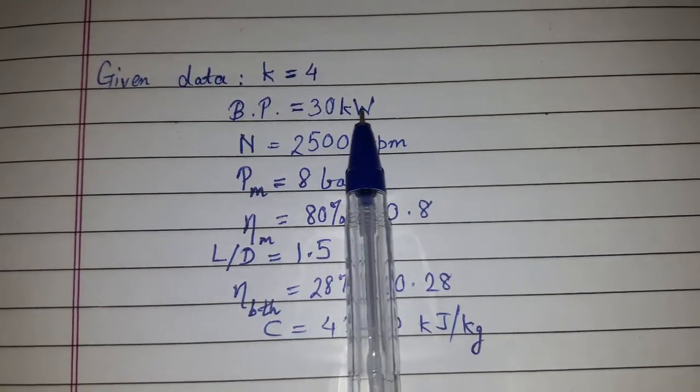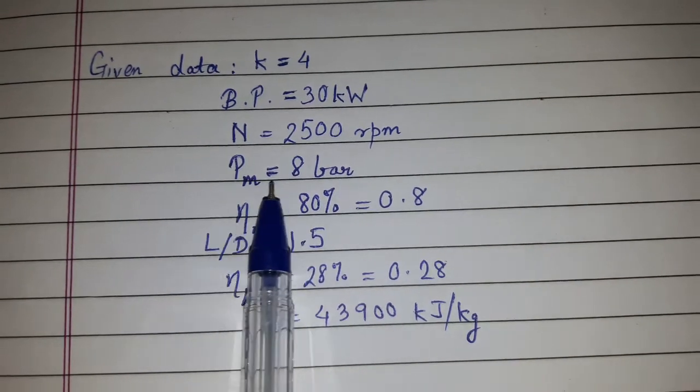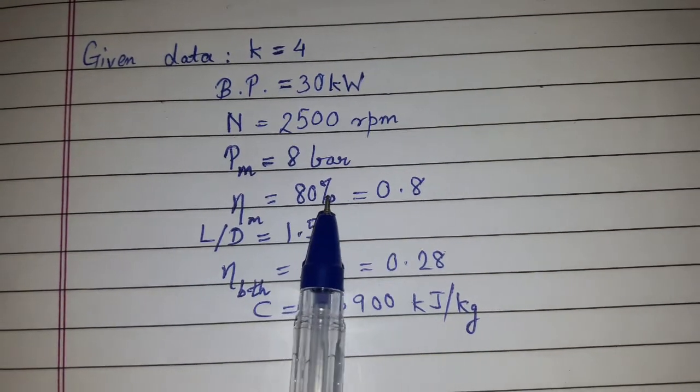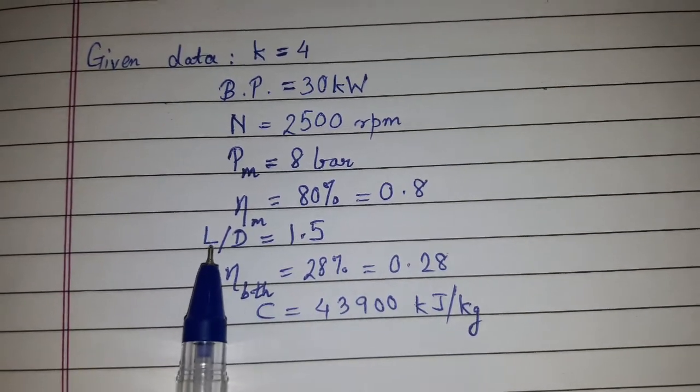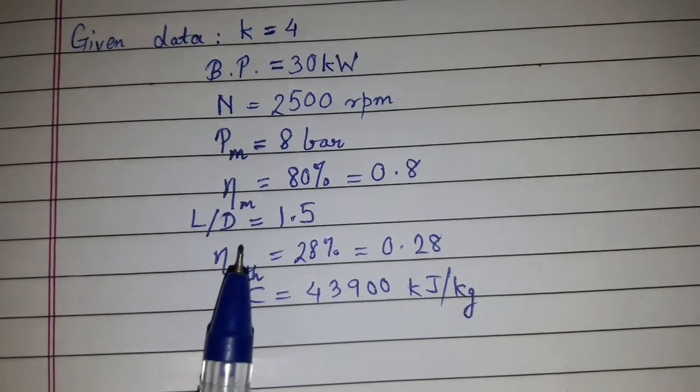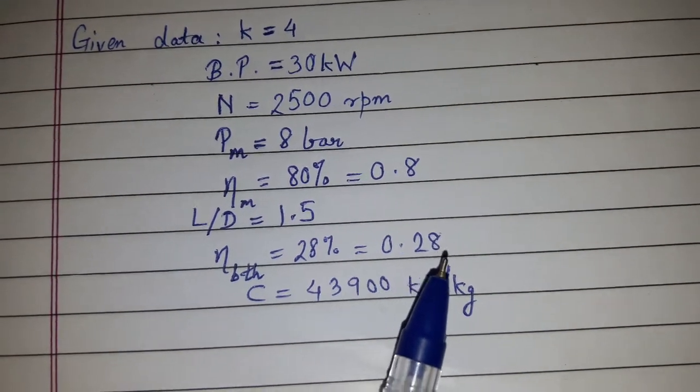So this is BP 30 kilowatts, capital N equals 2500 rpm, pm equals 8 bar. Mechanical efficiency is given as 80 percent, that is 0.8. L by D ratio is given as 1.5.